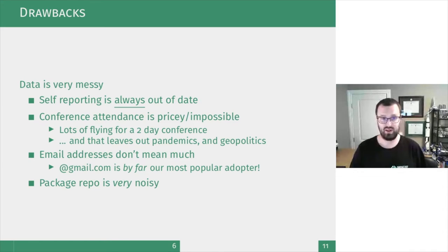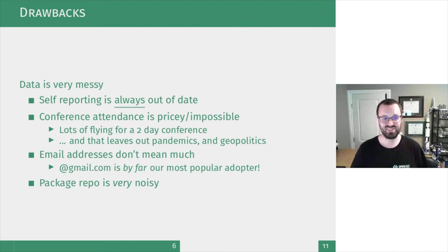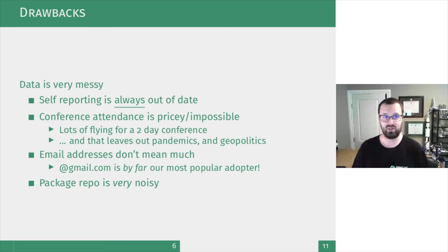Email addresses from the users list don't mean much. I'm almost 100% certain Google does not have an Opencast instance — they run YouTube. You can subscribe to a list and never use a piece of software. The package repository is also very noisy. We can look at logs for who downloaded a file, but in many cases they're only downloading the package index — not the actual software. And even if they do download it, that doesn't tell us the ongoing story: what version they're running, or if they ever even installed it.